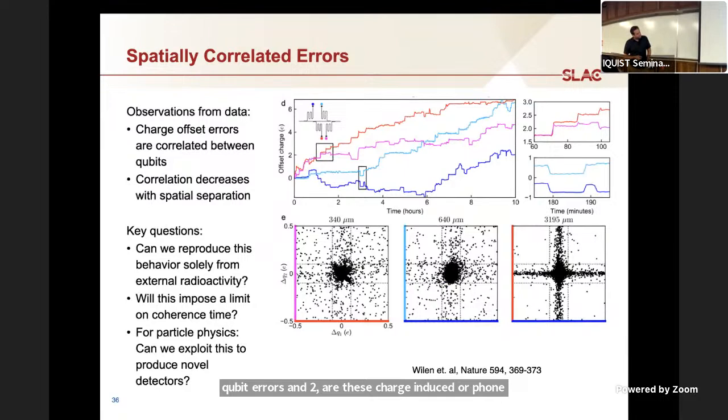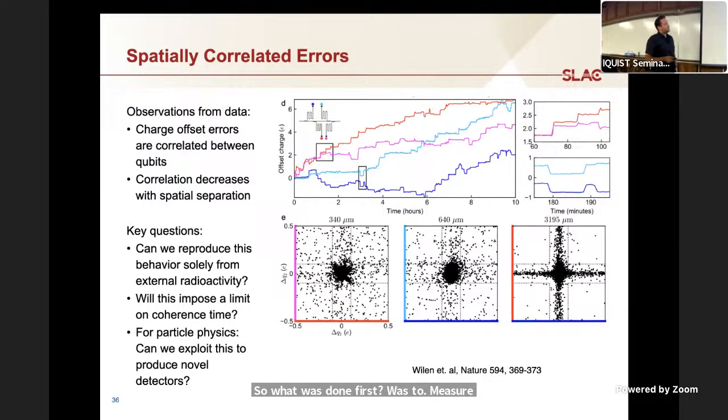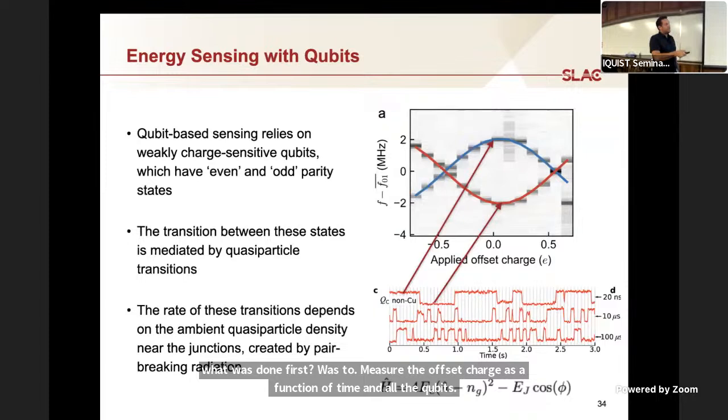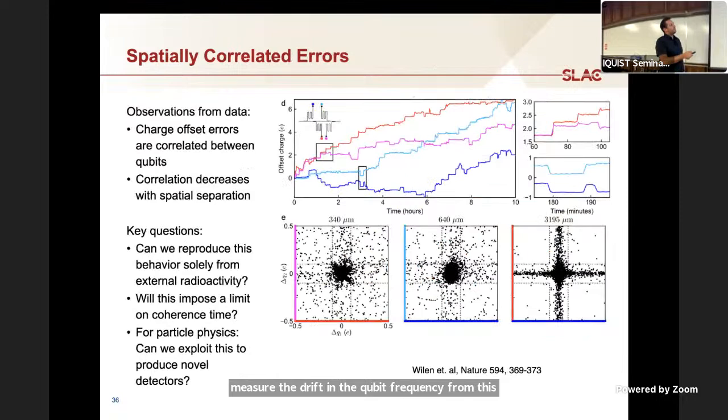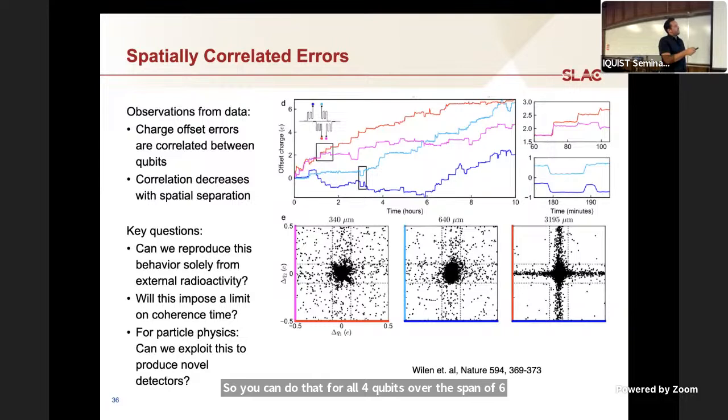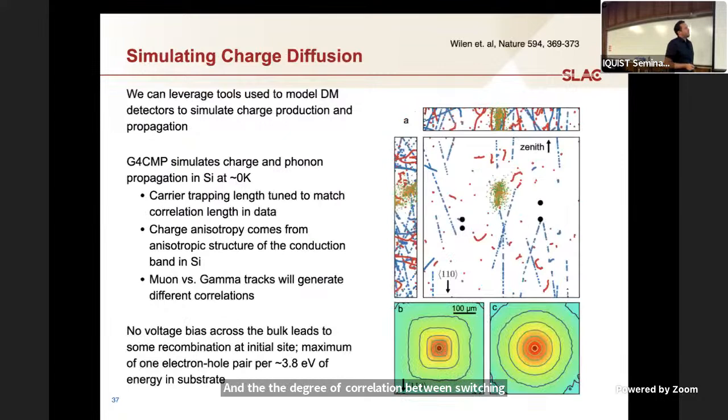In some initial studies we did, we're just using regular transmon qubit chips. This one, this is a chip made by Wisconsin. There are four qubits. The questions here were twofold. One, when you have a radiation event, how correlated are qubit errors? And two, are these charge-induced or phonon-induced? What was done first was to measure the offset charge as a function of time in all the qubits. You initialize your readout somewhere with a known charge offset, and then you do repeated Ramsey experiments in order to measure the drift in the qubit frequency from this initial starting point. You can do that for all four qubits over the span of six to 10 hours.